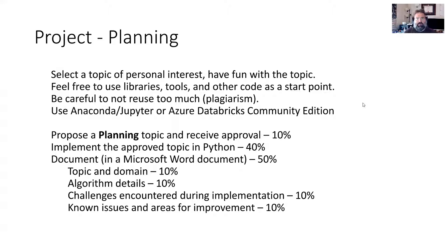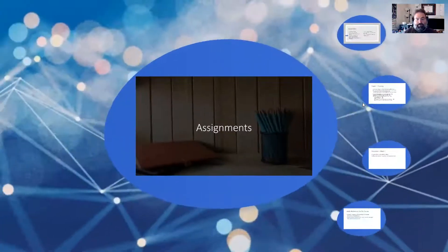You start off with 10% just by having come up with the idea and getting approval. Implement that approved topic inside of Python for 40%. Then the overall document is 50% — and that should be evenly split amongst those four domains, so 12.5% apiece. So 50% is essentially four 10s, roughly speaking.